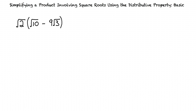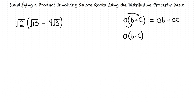What does the distributive property do? The distributive property does the following: for any real numbers a, b, and c, we have a times b plus c equals ab plus ac. And for any real numbers a, b, and c, we have a times b minus c equals ab minus ac.